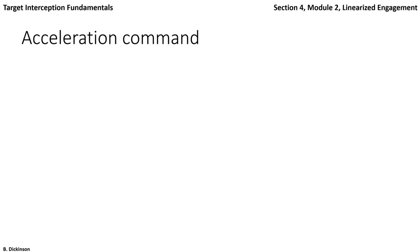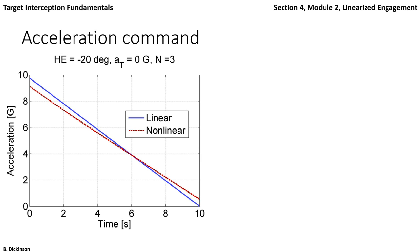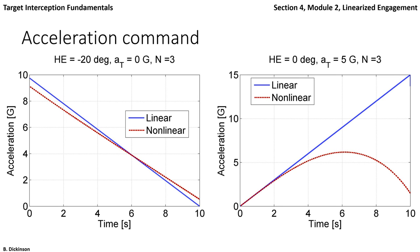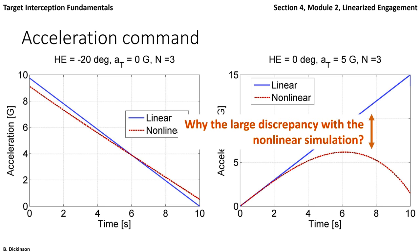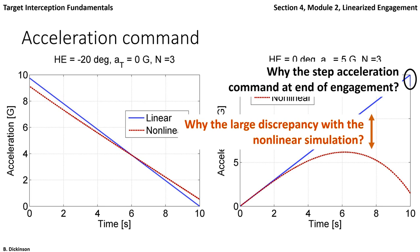Let's first compare the acceleration commands of the linear and nonlinear simulation. Here's the plot of acceleration in Gs versus time for the linear and nonlinear, where we have an initial heading error and no target acceleration, with a navigation gain of 3. Pretty good comparison, not too far off. What about the accelerating target case? With heading error zero and the target accelerating, we suddenly see a fairly large discrepancy. Two things immediately pop out: why the large discrepancy with the nonlinear simulation for the accelerating target case, and why there is a little step at the end of the engagement.